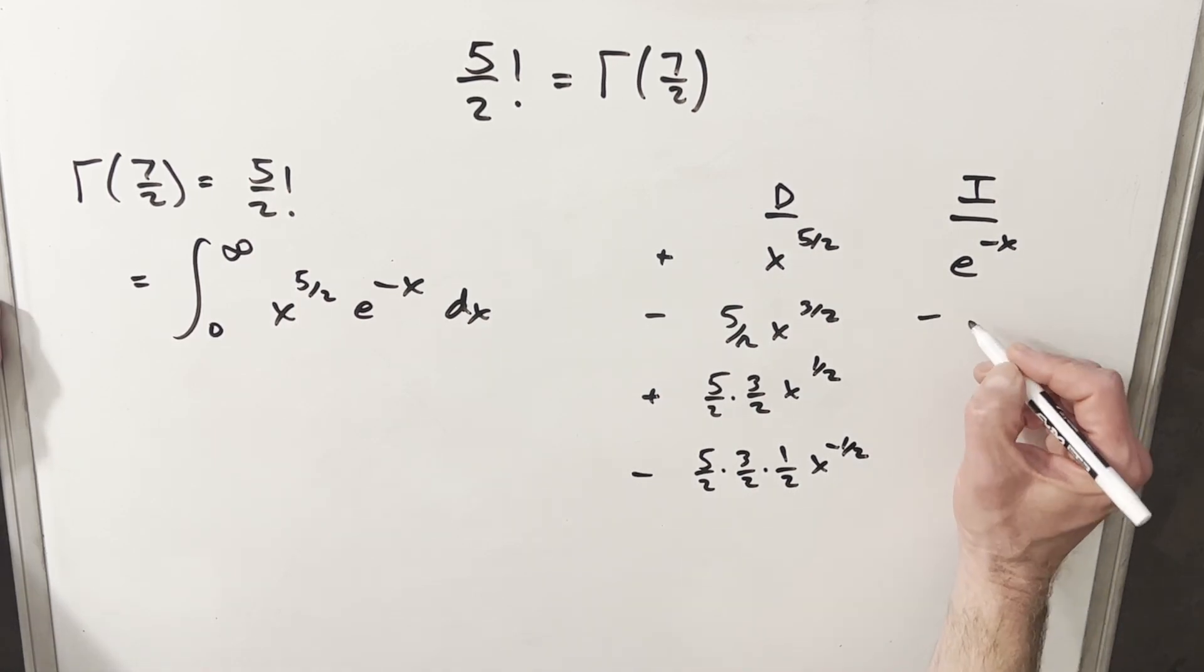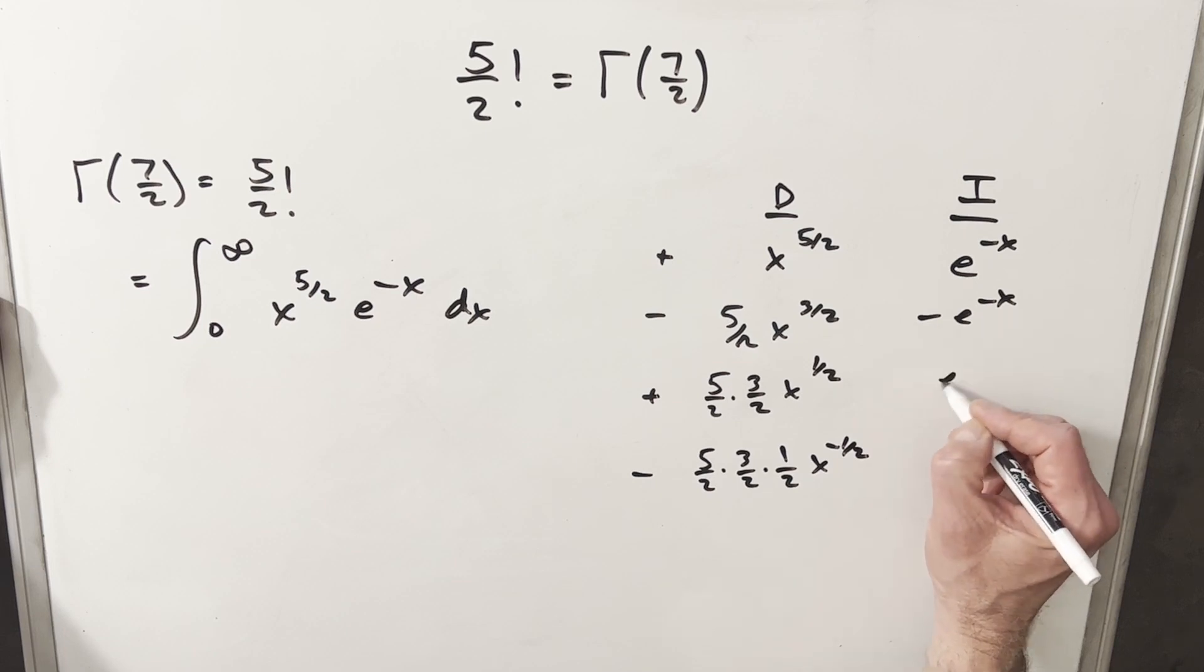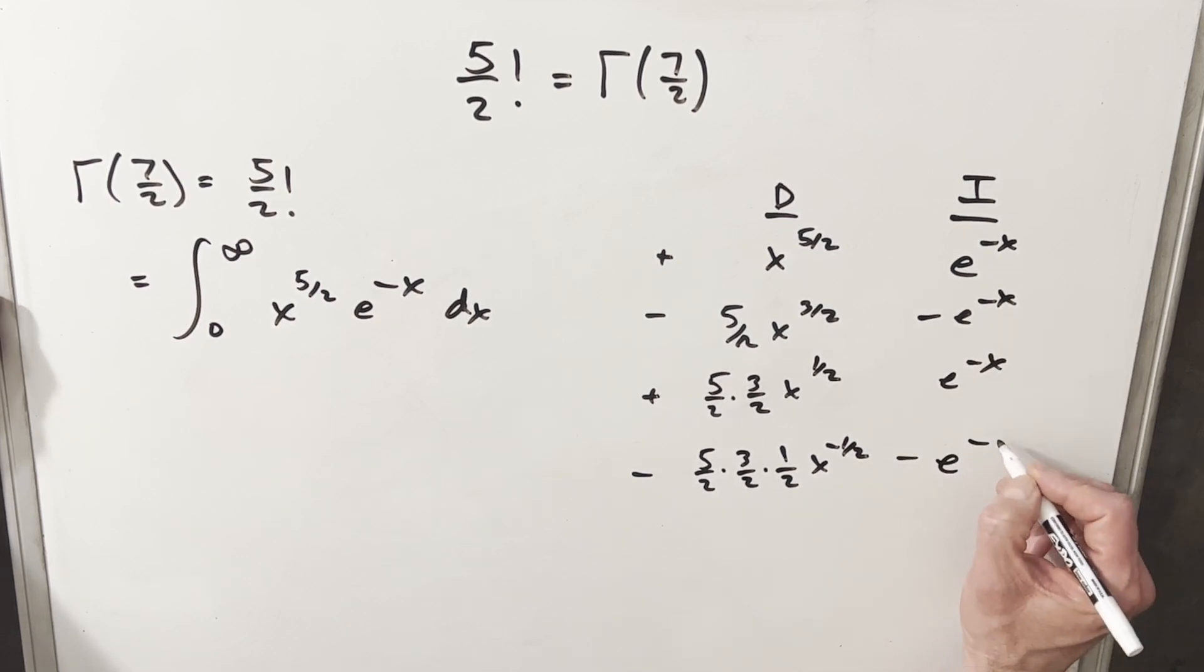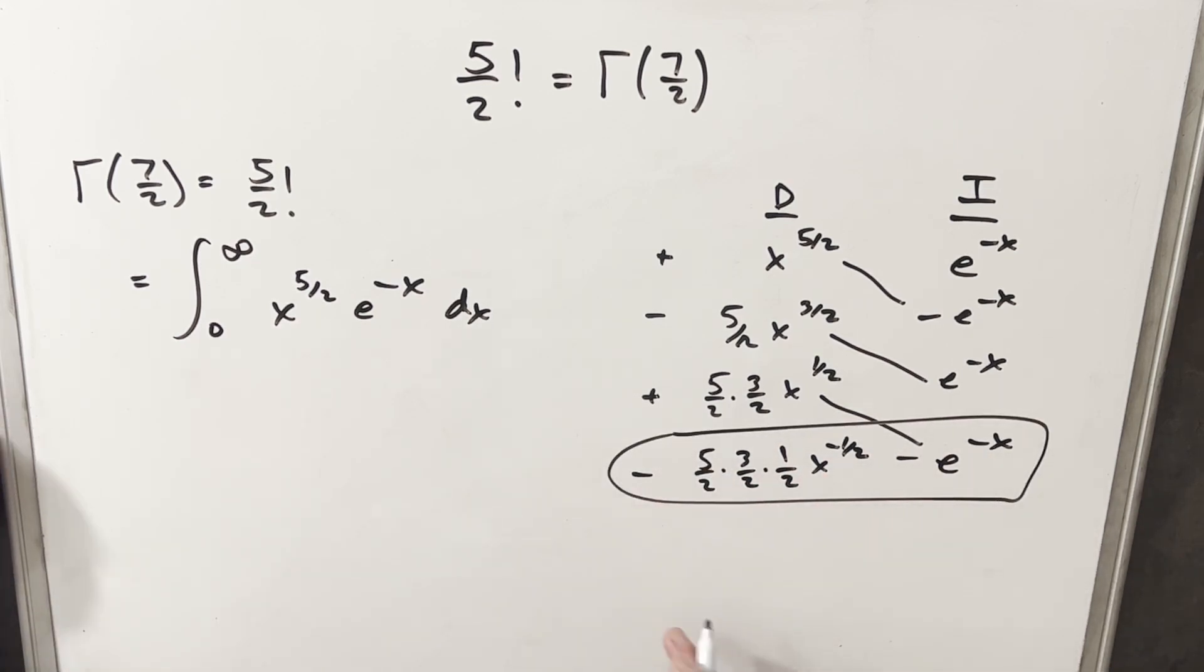Here we'll integrate. This is simple. We're going to have e to the minus x. Then we're going to have e to the minus x, because the minus cancels, and then we're going to have minus e minus x. So part of our solution is just going to be these diagonals, and then this last row is going to be an integral. Let me write all this out so we can just look at it.